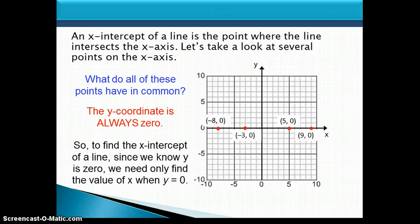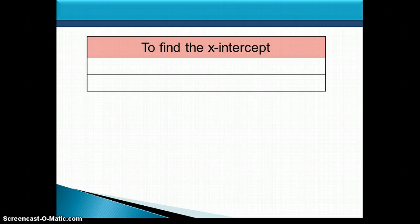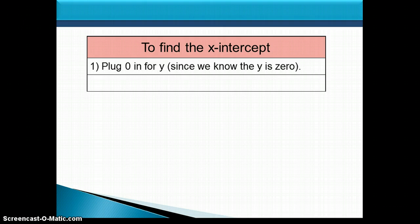So to find the x-intercept of a line, since we already know that y is 0, we just have to find the value of x when y is 0. To find the x-intercept, we first plug in 0 for y and then solve the resulting equation for x.